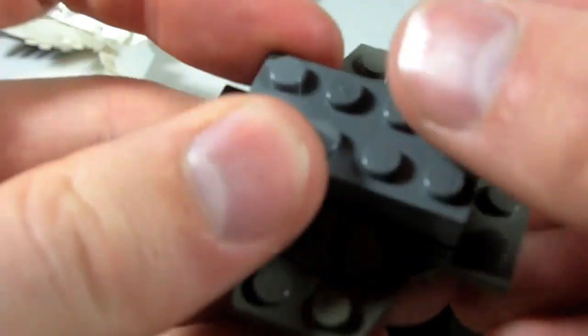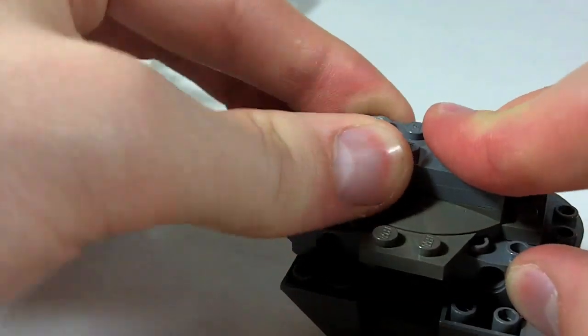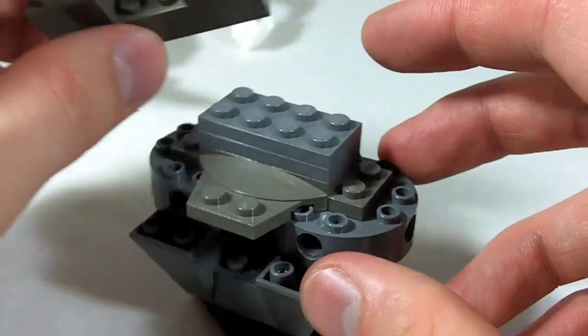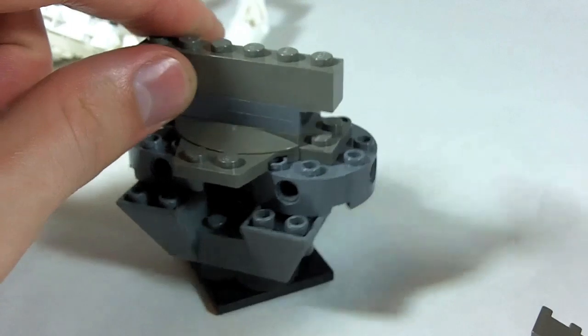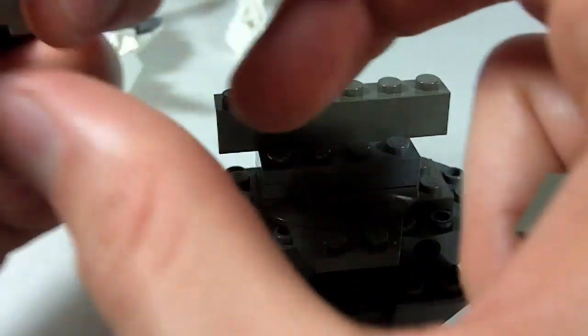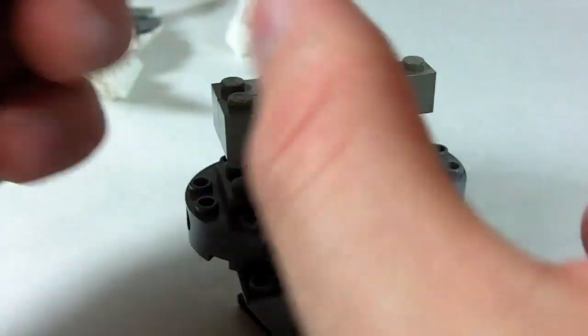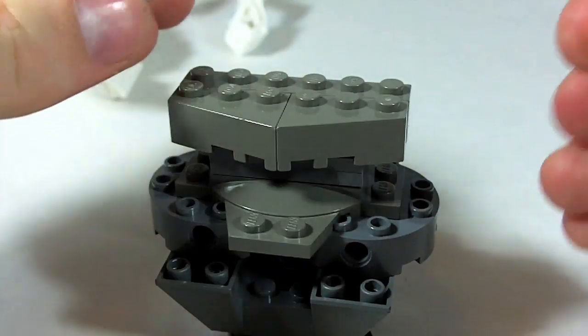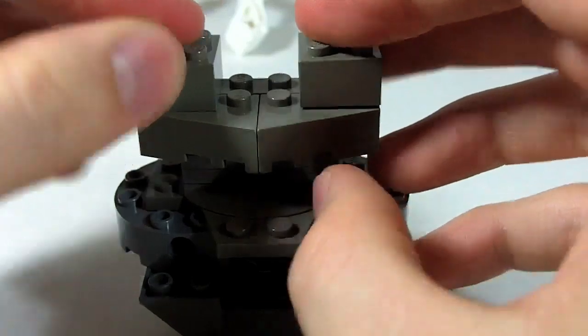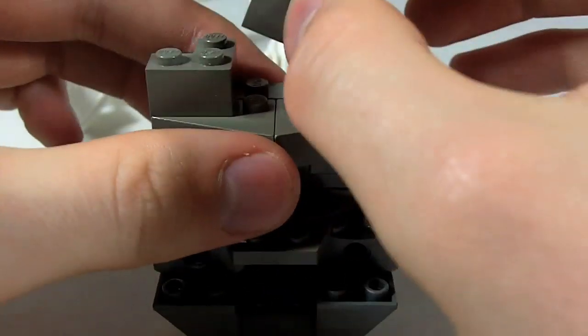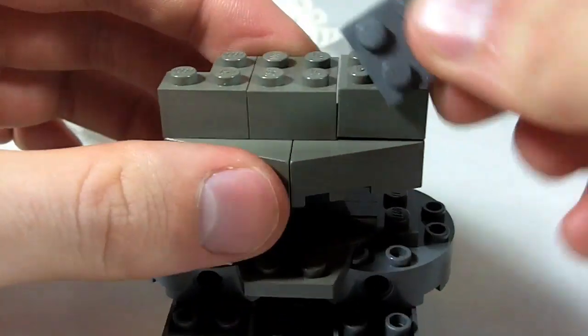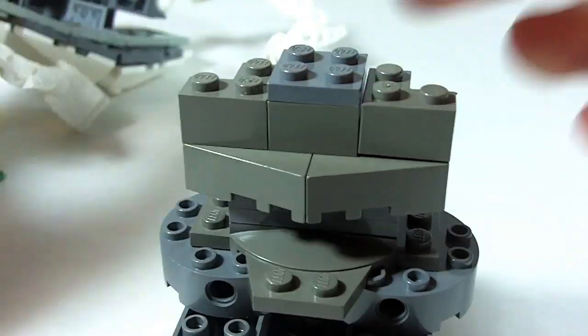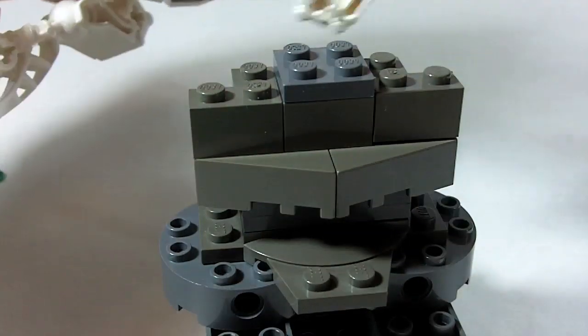Then this is two two by four plates on top of one another. You'll see that I'm mixing new and old grays because I don't care. This is a one by six brick. This is a wedge brick. Opposite wedge brick. Some corner bricks. And two by two brick with a two by two plate on top. I'm sure the reasons for that will become clear soon.